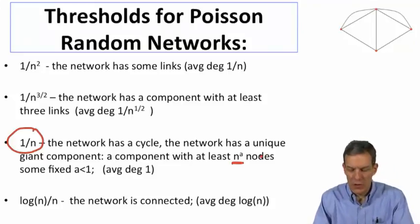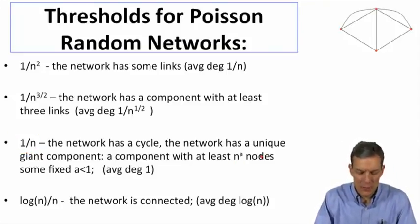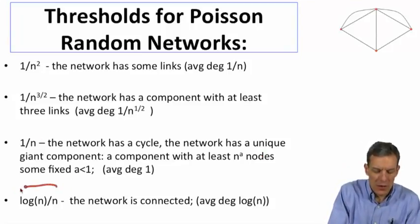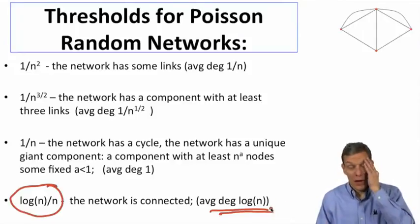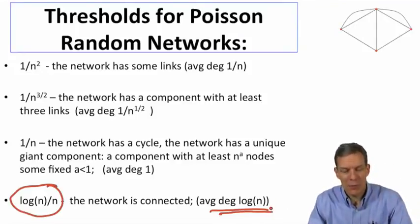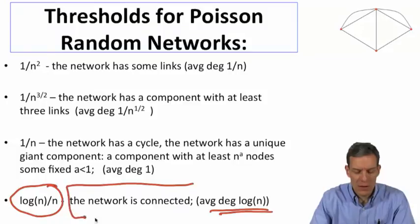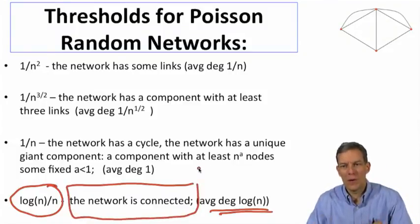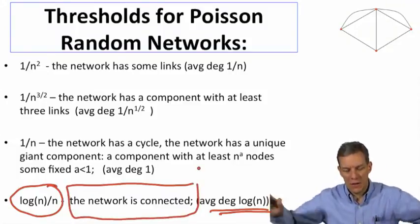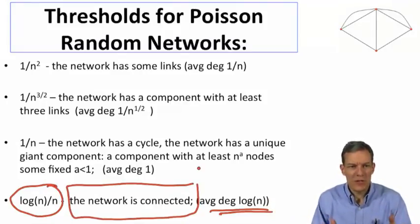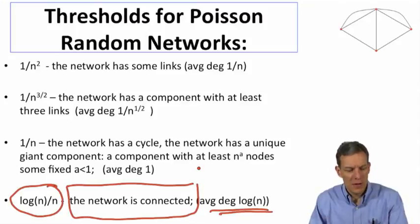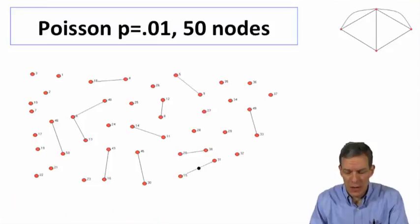Probably one of the more interesting thresholds comes in at log(n)/n. The average degree now means people expect to have log(n) neighbors, and at that point the network starts to be path connected — you can go from every node to every other node, and you actually have a connected network. So let's have a look at some pictures of networks drawn in this way.